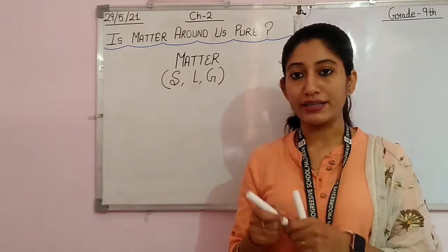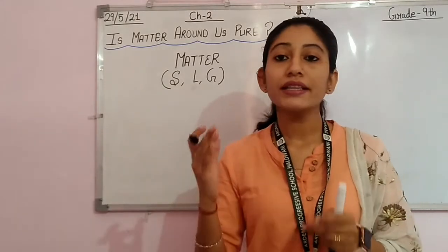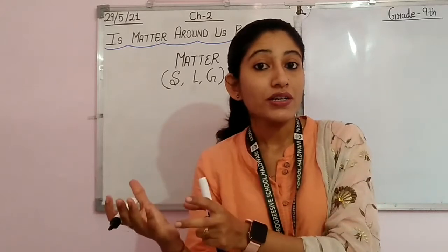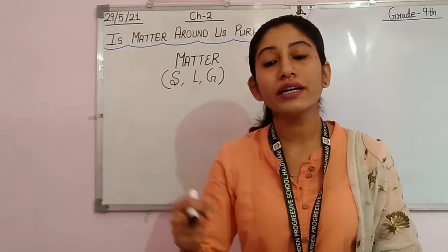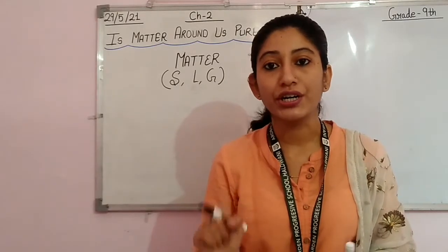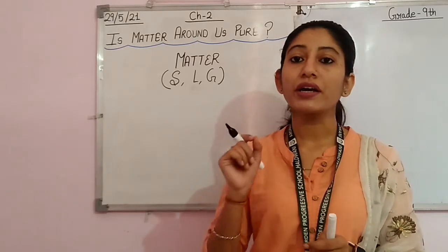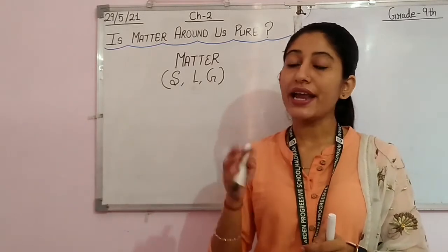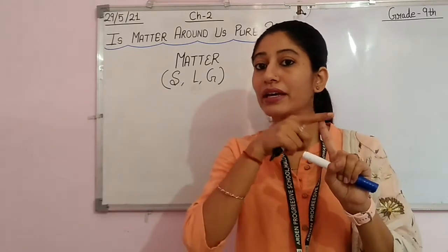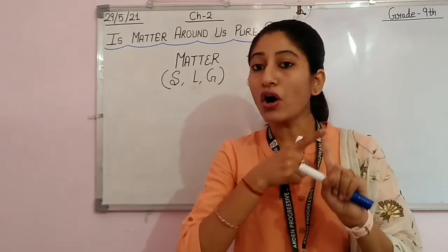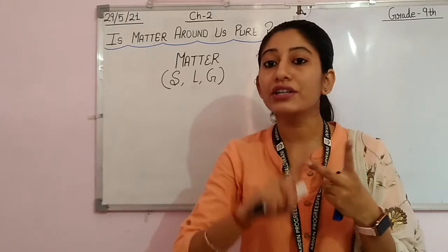When we say that this matter is pure, in chemistry it means that this particular matter has a single type of component. Now, when I am saying pure, it means there must also be something impure — and that is actually a mixture. So what we are going to study in this chapter is that matter can exist in two forms: either in pure form or in mixture form.